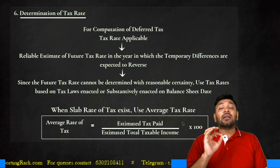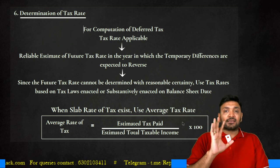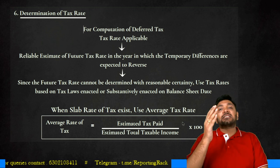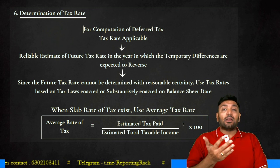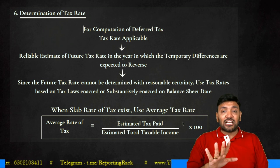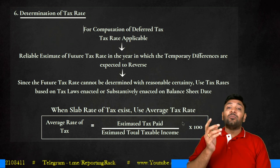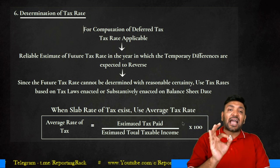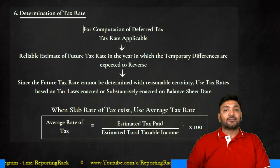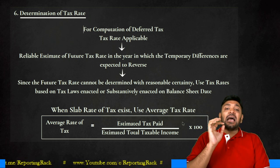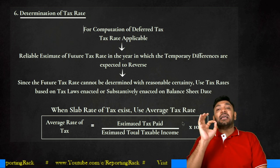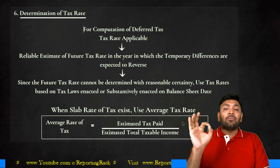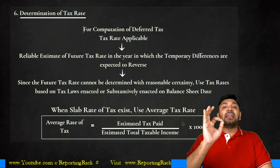Sometimes a slab rate of tax exists — though for companies it doesn't currently apply, if Ind AS becomes applicable to individuals with slab rates, then I will use the average rate of tax. Average rate of tax = (Total Estimated Tax ÷ Total Estimated Taxable Income) × 100.